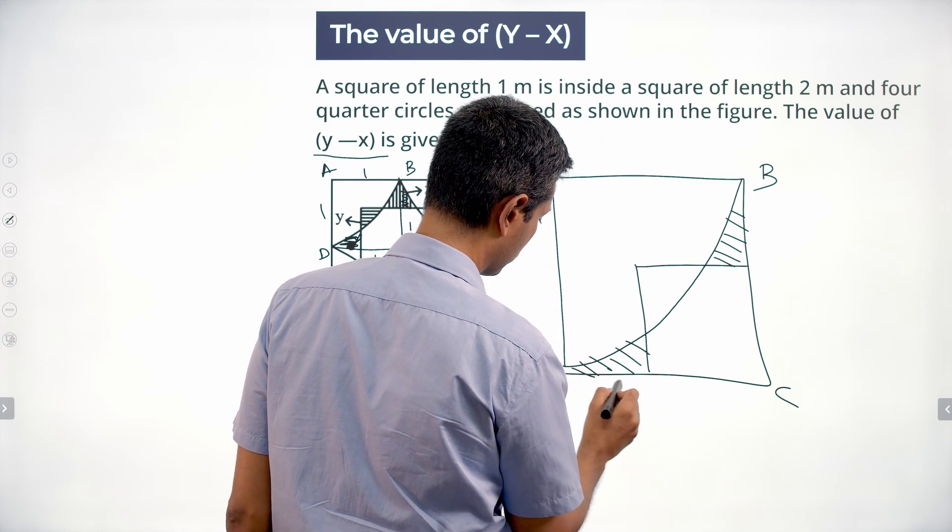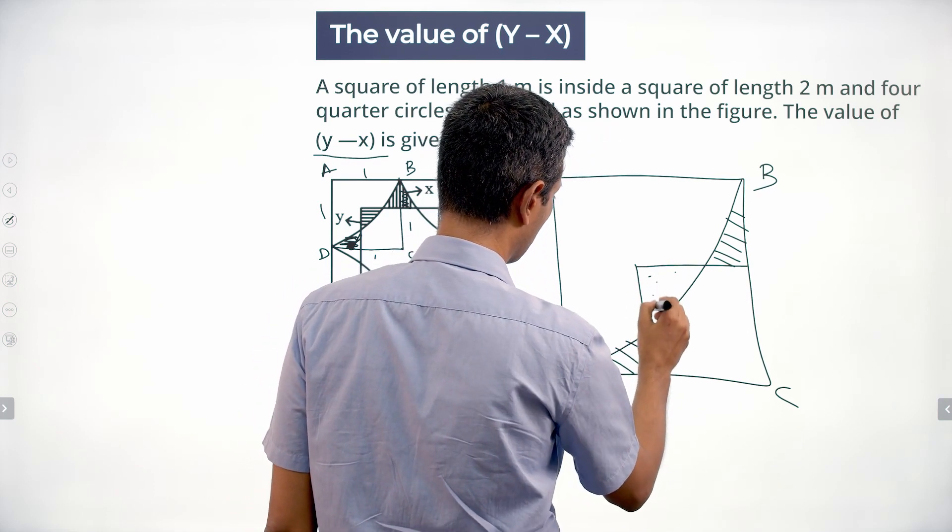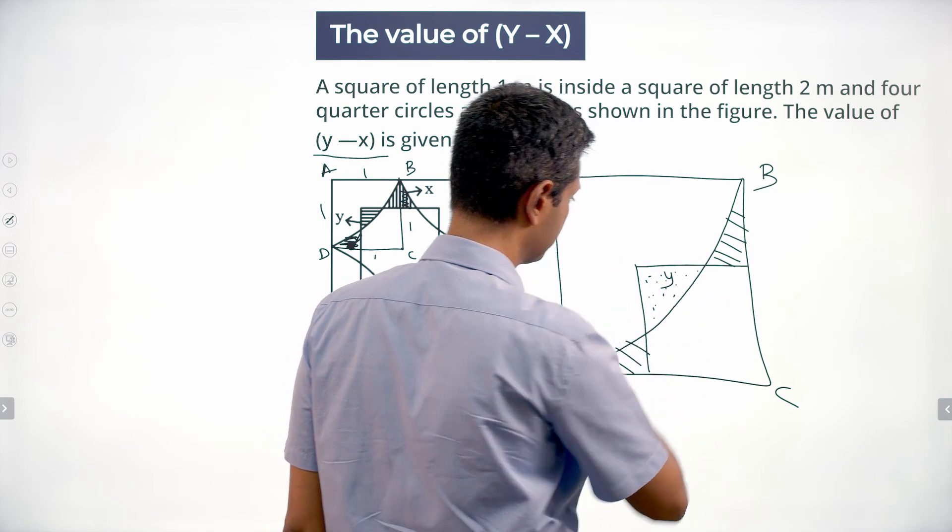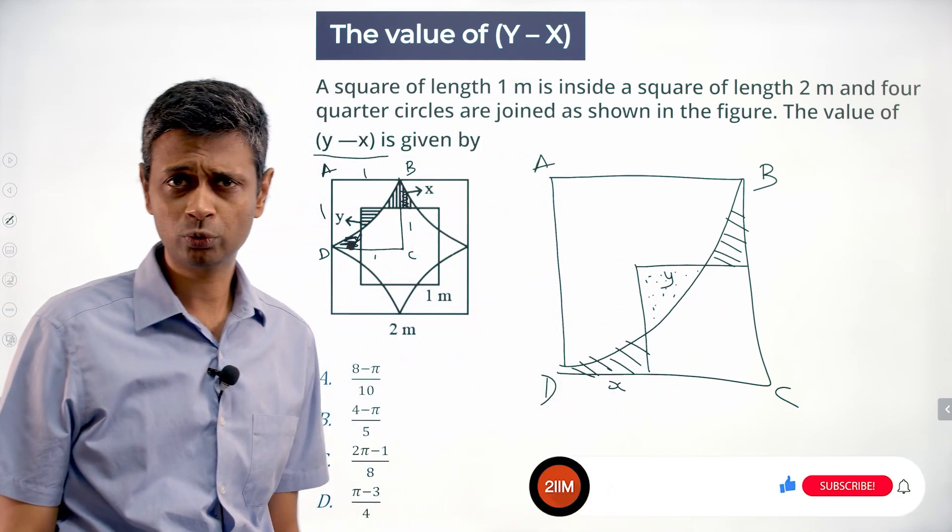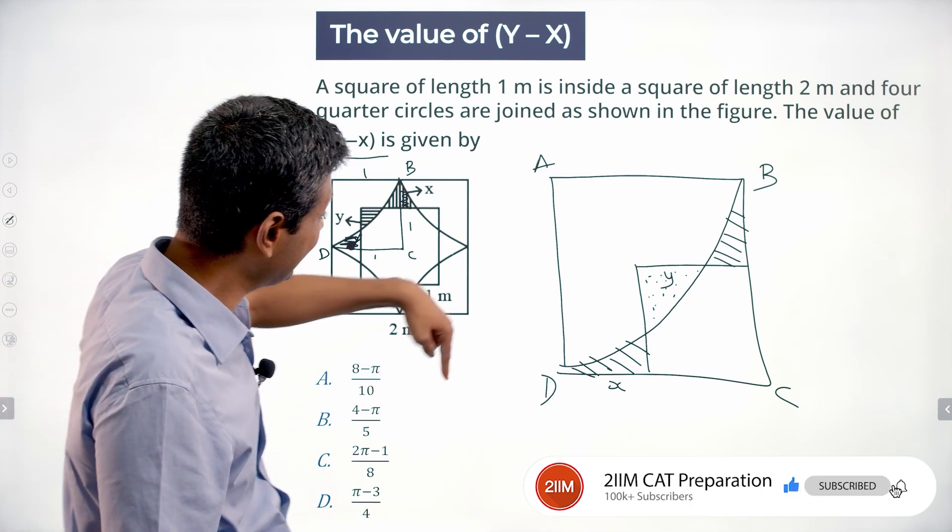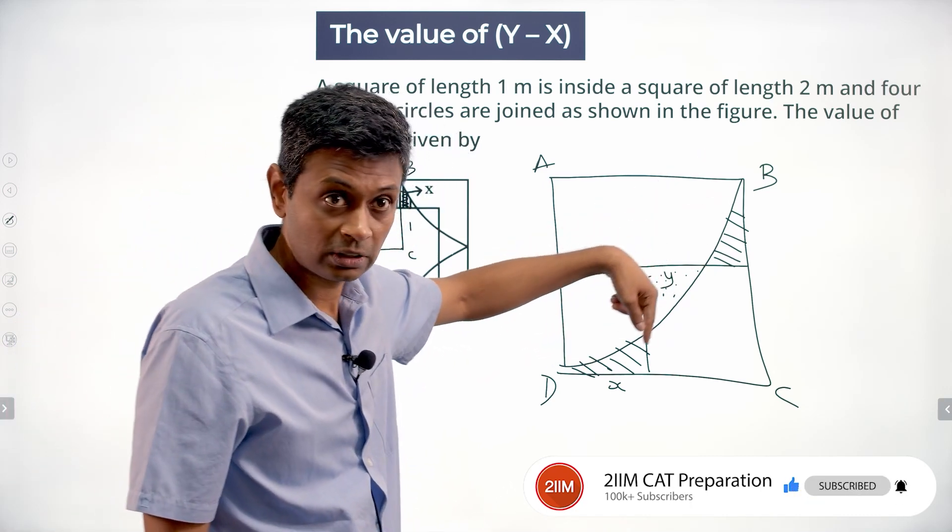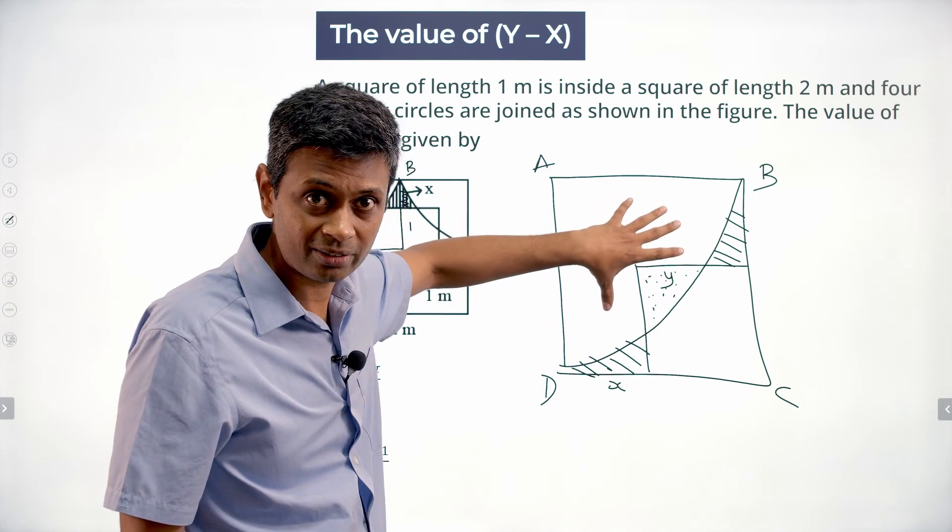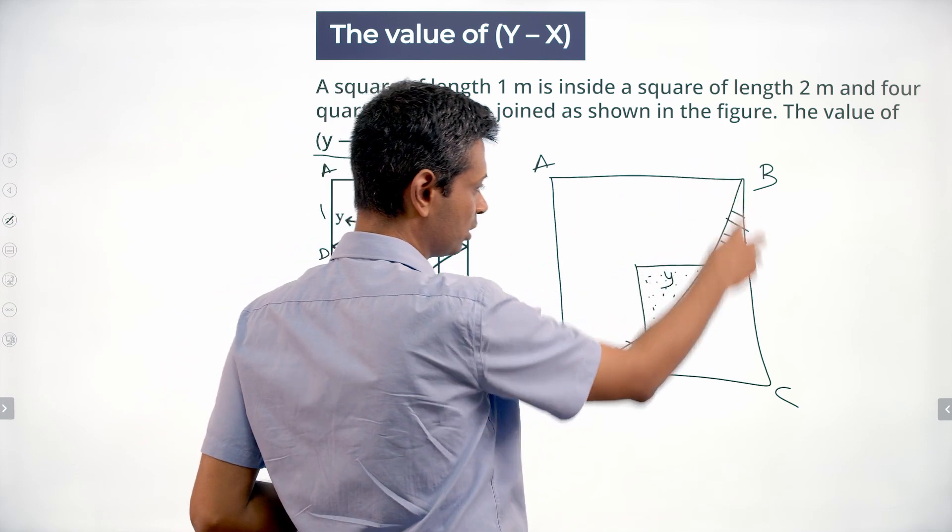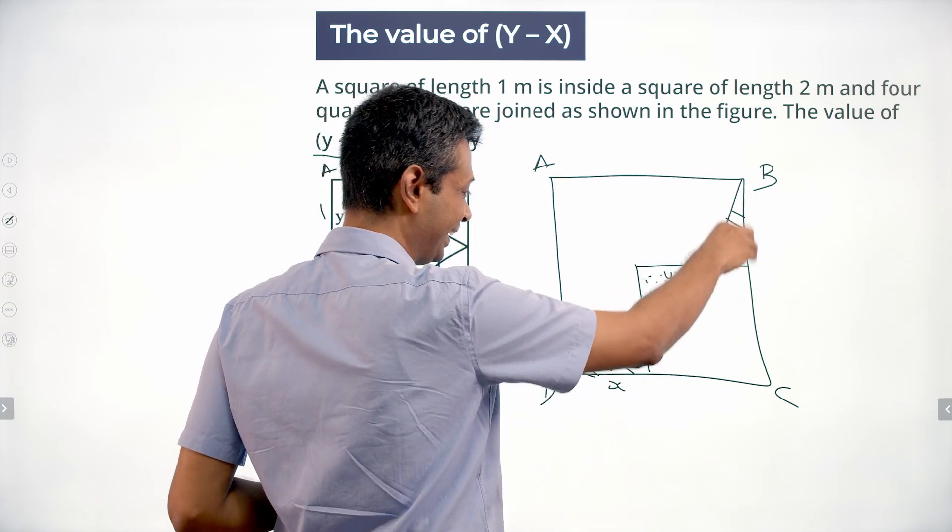This part plus this part is x. This is y. Lovely, beautiful, now I'm on to something. Now if I take this arc and then think about this quadrant, I can find the square and subtract this quadrant to get this remaining part.